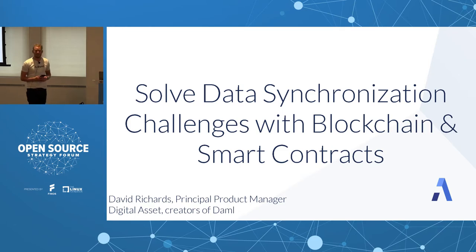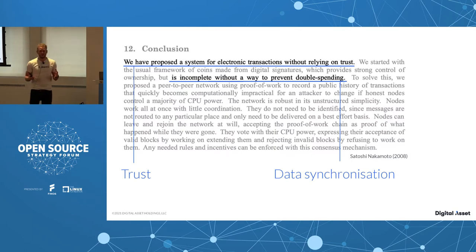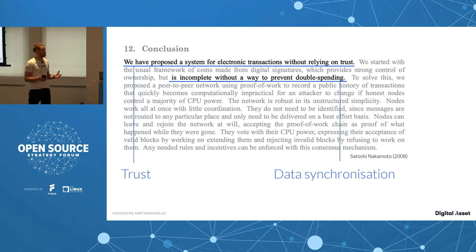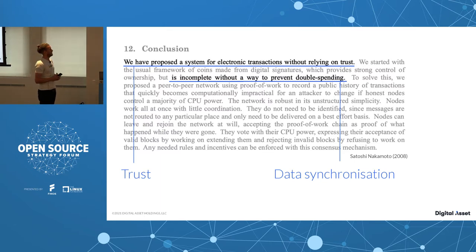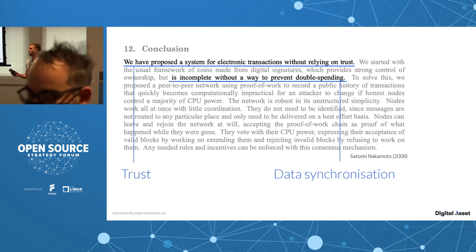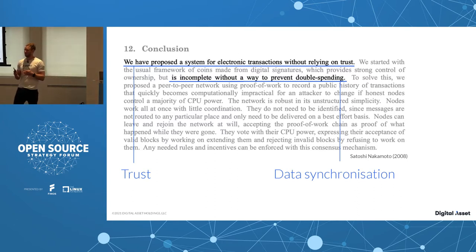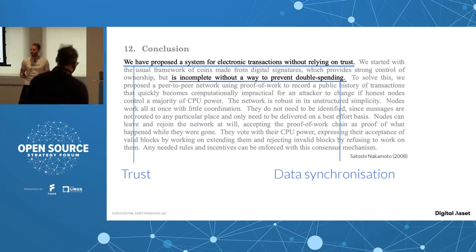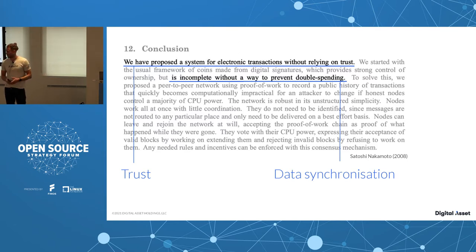I'm here to talk about how you can solve data synchronization challenges with blockchain and smart contracts. You can't really talk about blockchain without talking about Bitcoin. In his 2008 white paper, Satoshi Nakamoto first talks about trust — he proposed a system for electronic transactions without relying on trust. There's a whole debate online about whether blockchain actually eradicates trust or simply changes it into network rules rather than a third party.